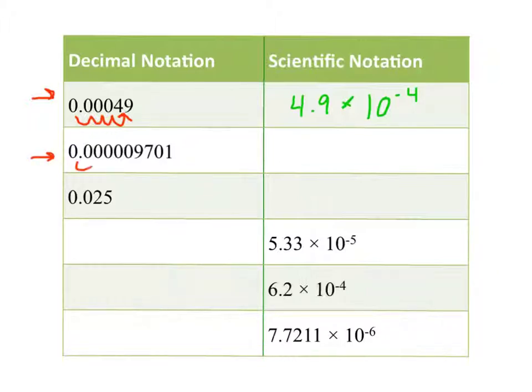My next number needs 1, 2, 3, 4, 5, 6 hops. So in scientific notation, I'll write 9.701 times 10 to the negative 6.